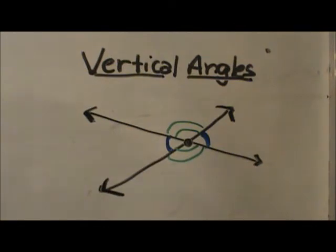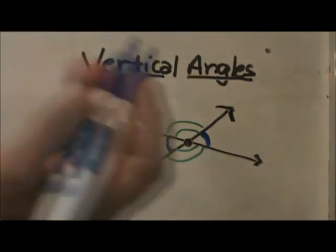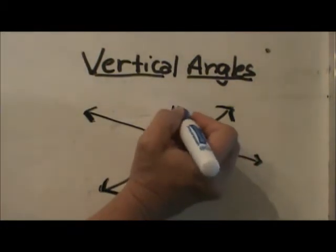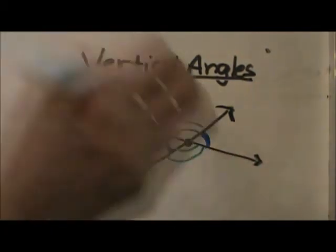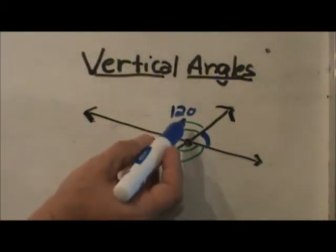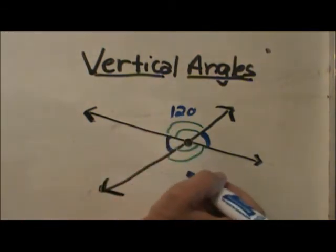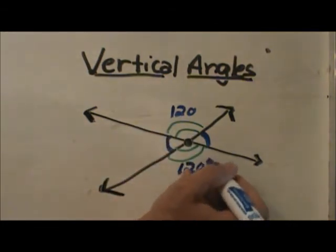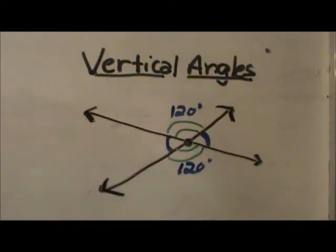Now I am going to throw some numbers in there. What if I make this angle 120 degrees? Can I figure out the rest? I can. If this one is 120 degrees, we know this one has to be 120 also because they are vertical angles.